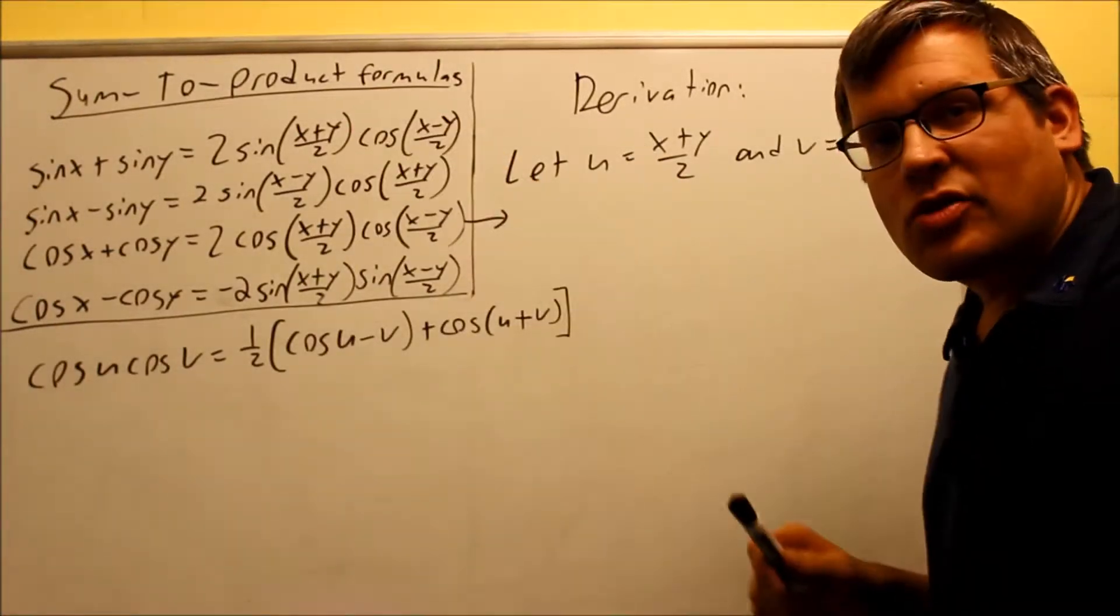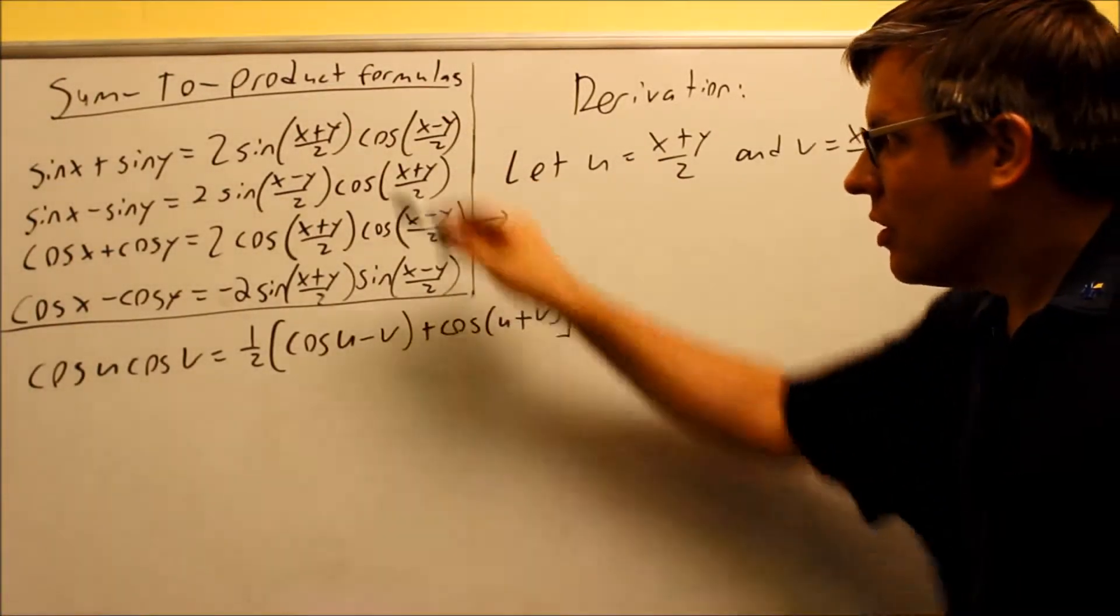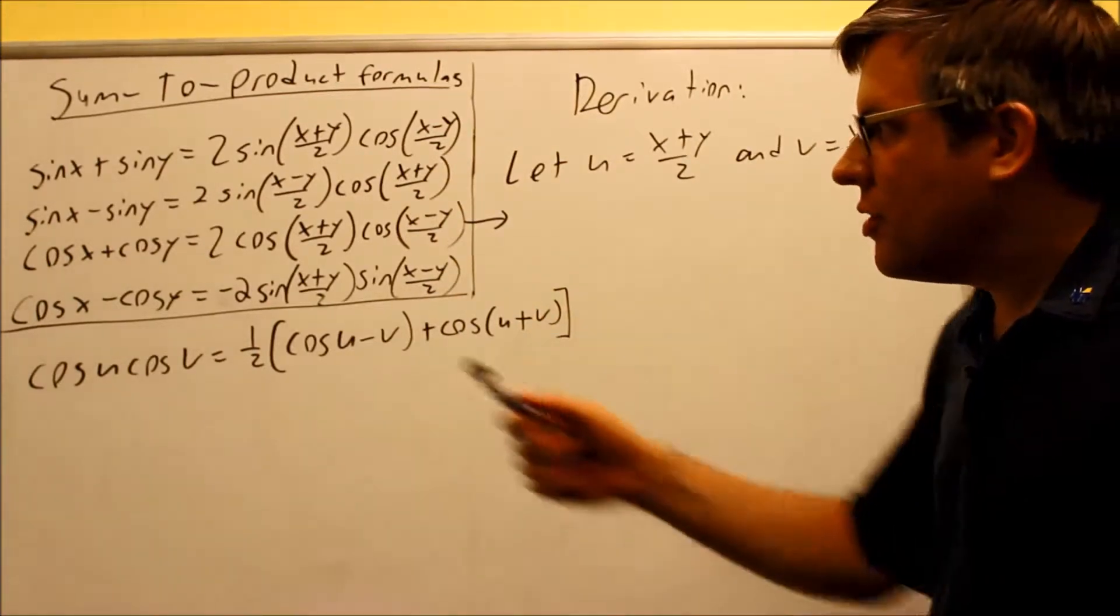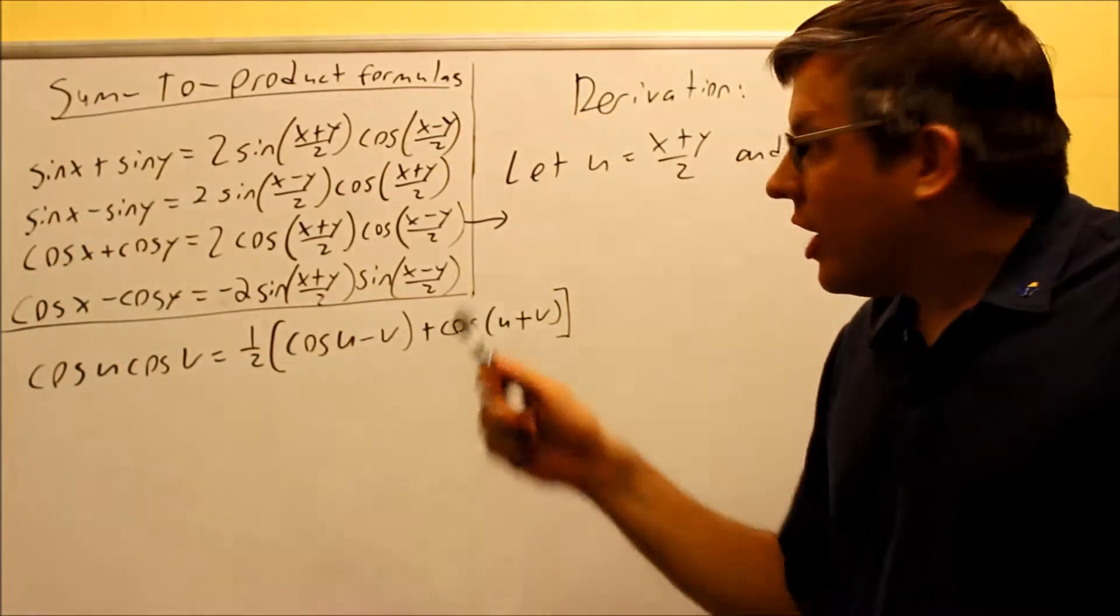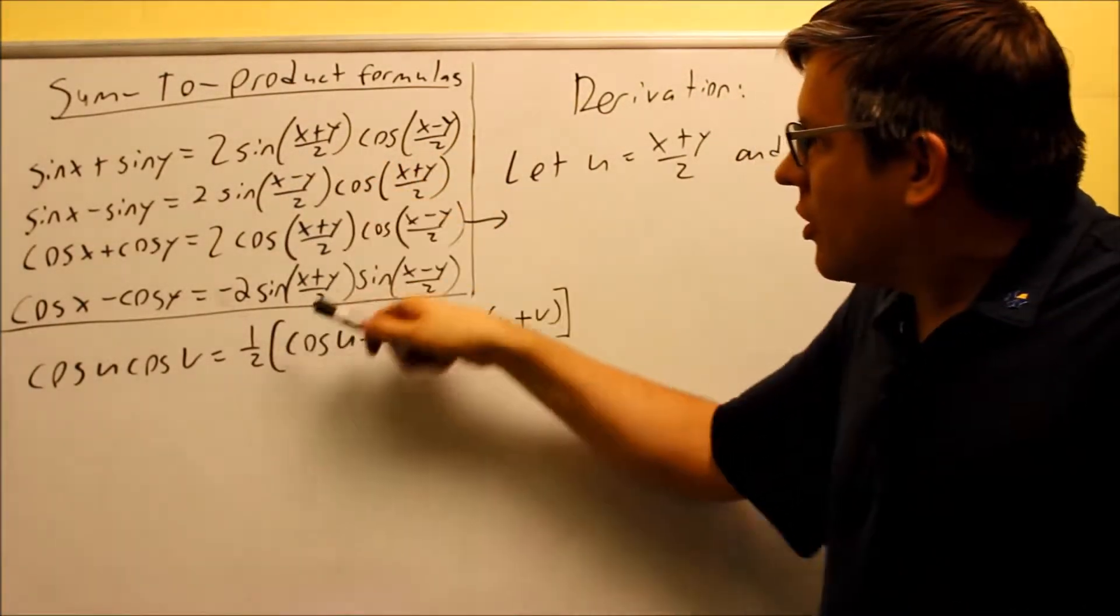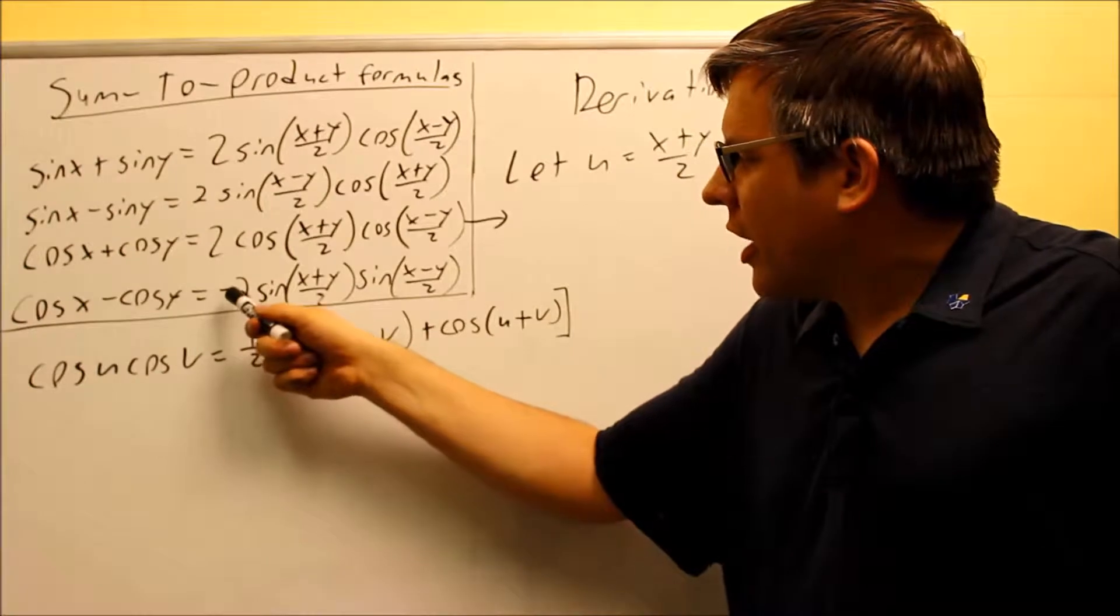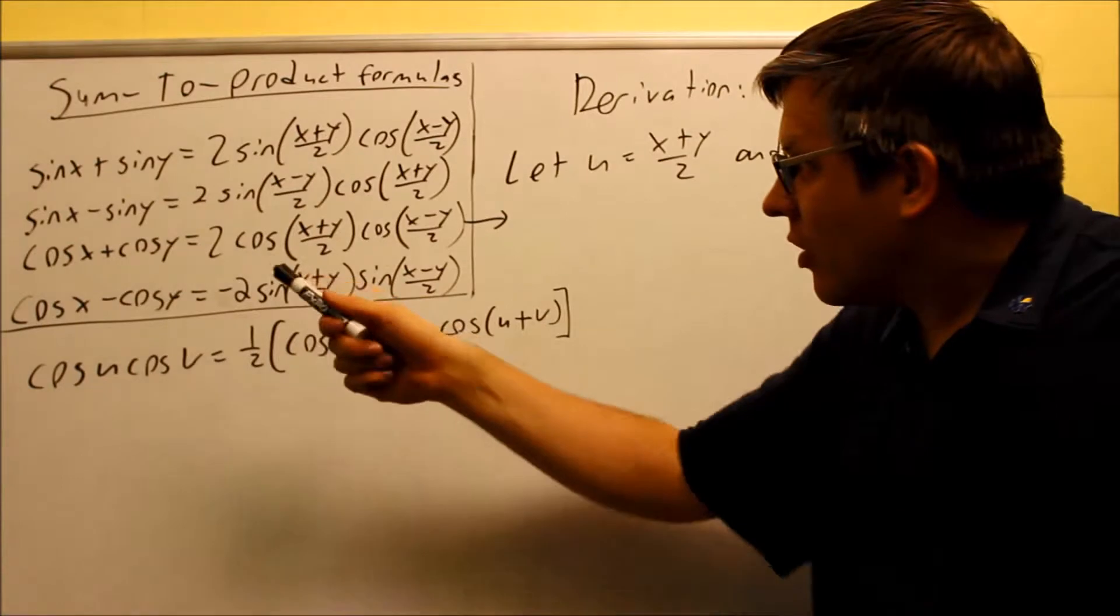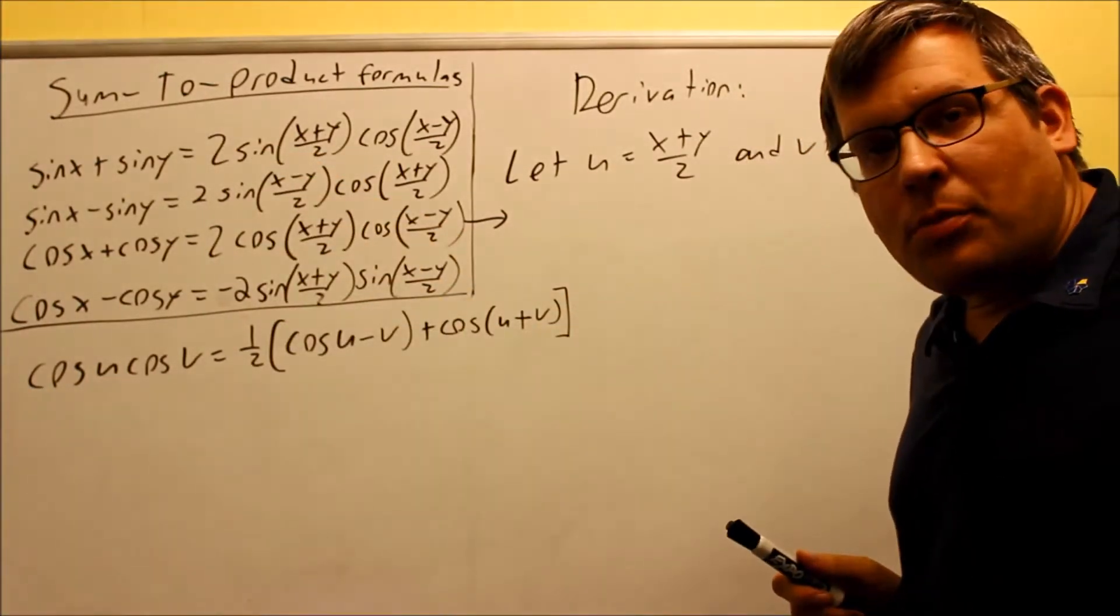Okay, now we're going to talk about the sum-to-product formulas. Here they all are listed here, and what these formulas allow us to do is take a sum and rewrite it as a product. So for all these here, there is one of them on the end here that has a negative two, so you want to make sure you get that one down. All the other ones are going to be positive.